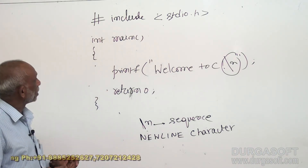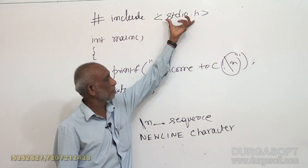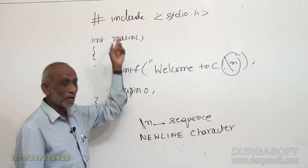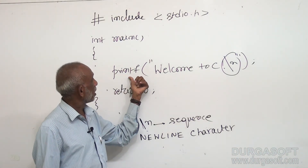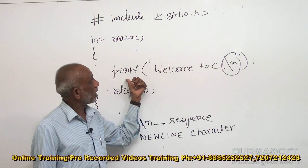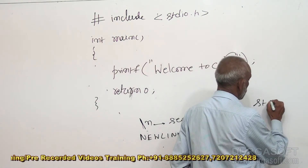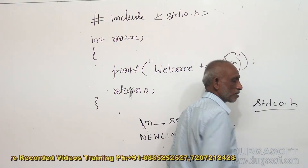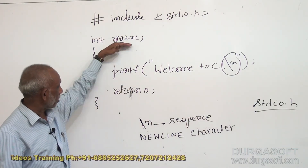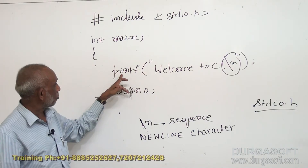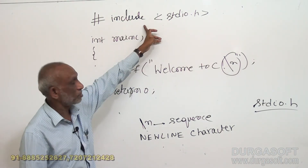If you go to the top, there is a statement: hash include with angled brackets containing stdio.h. What is this statement? We always use a printf statement here. The details of this printf function are specified in the file called stdio.h. This is a file which contains details of the printf function. When the compiler runs this statement, it looks for details of this function. We specify that these details are available in this file by this include statement.